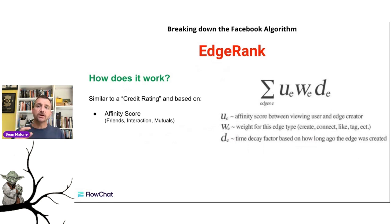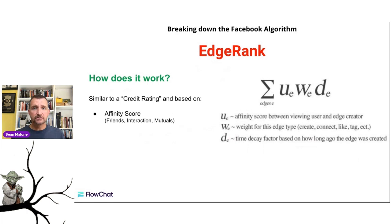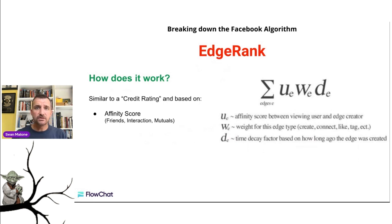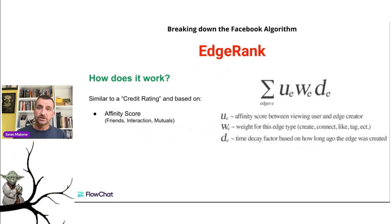That edge is then either shown or not shown to all of your friends. There are millions of edges created every second, and the algorithm could never show all of them in your news feed. What's shown are the edges taken by all of the rest of your network. The things that are most relevant — people you've been interacting with or people that have a lot of mutual connections — those edges are more likely to appear on your feed. The affinity score is based on: are you friends with that person? Do you interact with that person? Do you have a bunch of mutual friends?